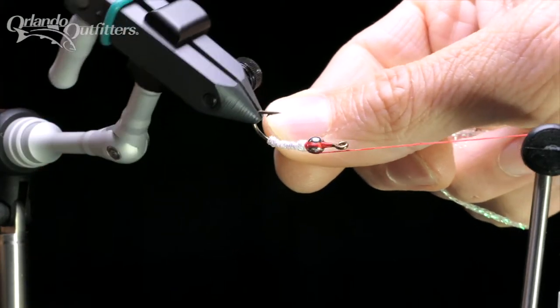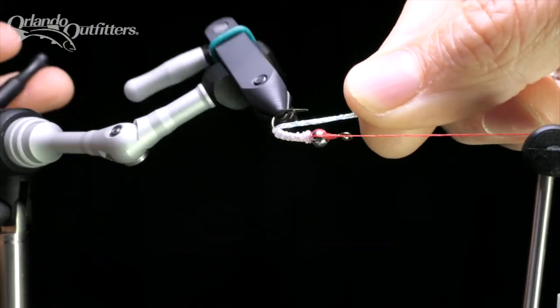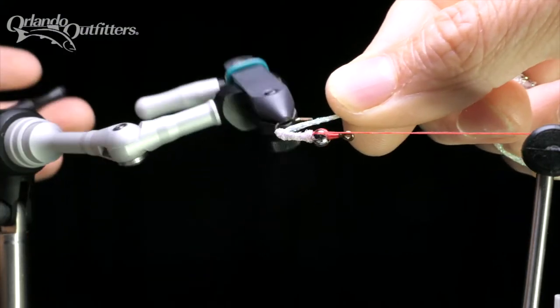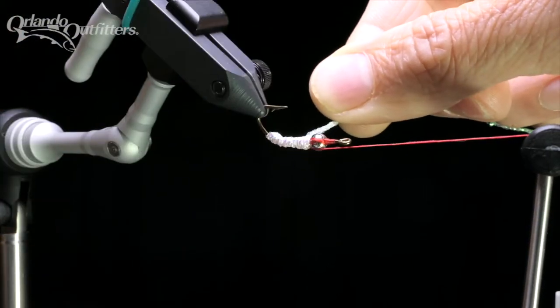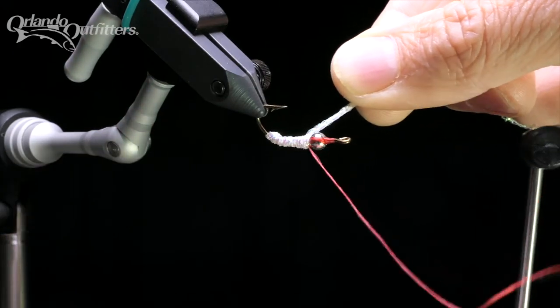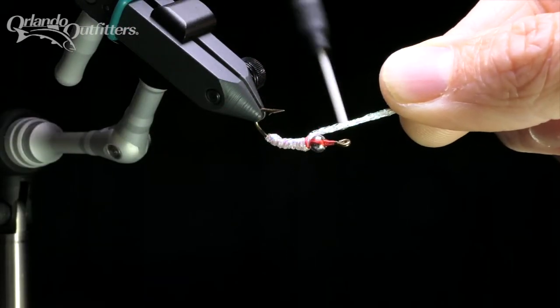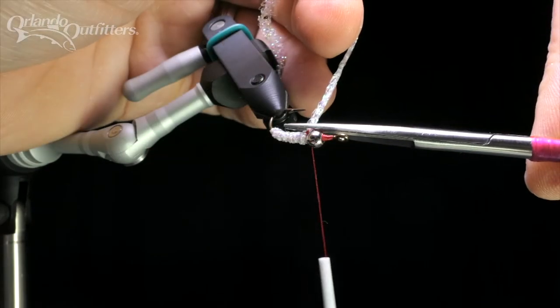Wrap back up to the bead, forming a double layer. You may have to adjust the wraps to give the body the shape you want. I like to make an extra wrap behind the bead to build the body up a little more. Then tie the sparkle braid off and trim it.